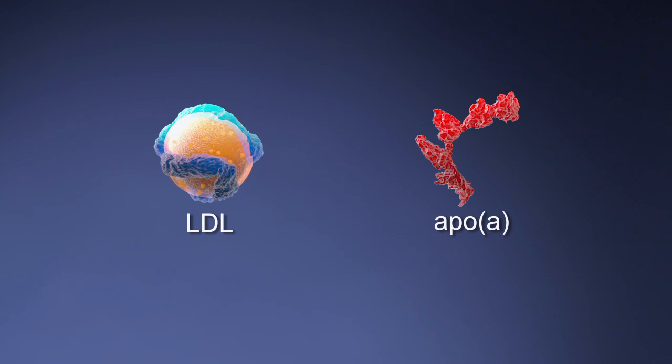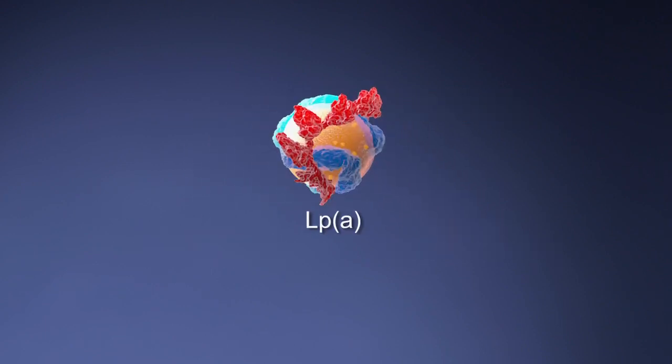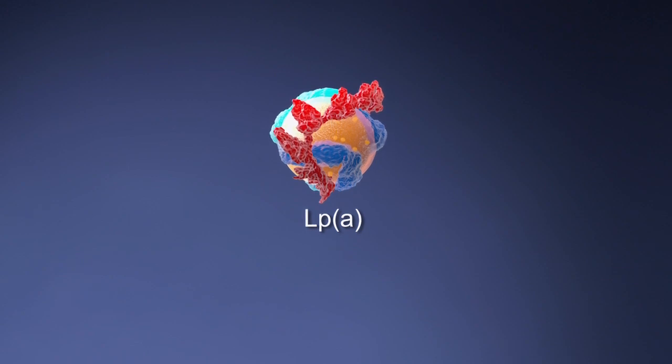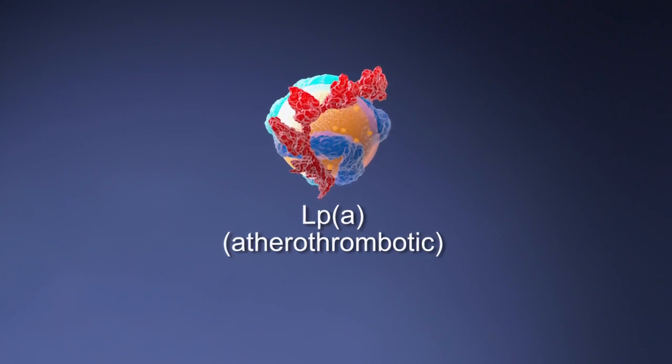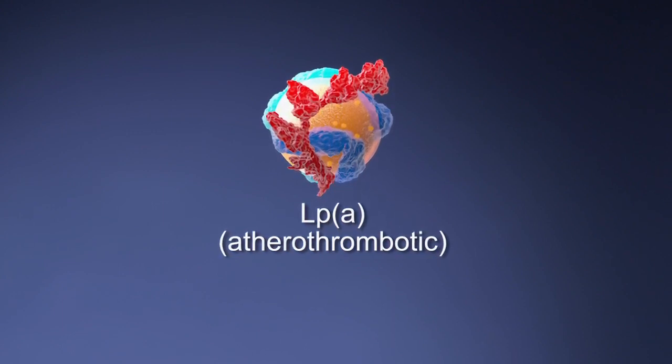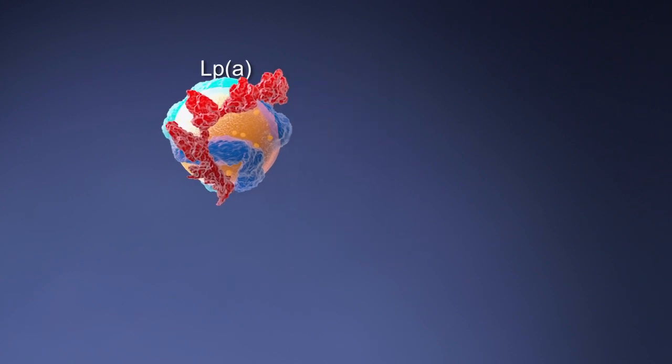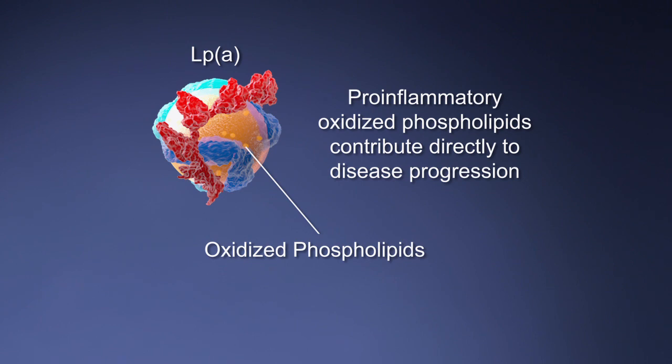Thus, the combination of an LDL particle and apo little a is particularly dangerous as it combines the atherogenic risk of LDL with the thrombogenic risk of apo little a. In other words, lipoprotein little a can be described as an atherothrombotic particle because it combines the cardiovascular risk from each of its components. In addition, there is evidence that lipoprotein little a carries pro-inflammatory oxidized phospholipids to the arterial wall, is retained in the arterial wall, accumulates in plaques, and contributes directly to disease progression.